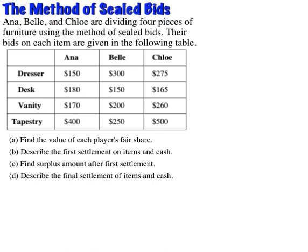No one knows how anyone bid until the point of reveal. Once that point of reveal comes, whoever bid the most is going to get those items. We see right away that Anna's going to get the desk, Belle's going to get the dresser, and Chloe's going to get the vanity and the tapestry. But there's more to it than just saying who gets the items. Anna's getting $180 in goods, Belle's getting $300, and Chloe's getting $760. That's not a fair outcome, so we have to delve into this a little further.